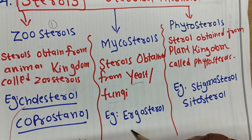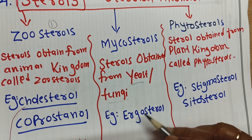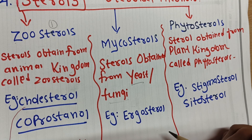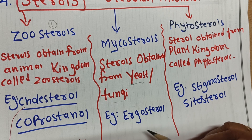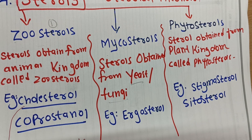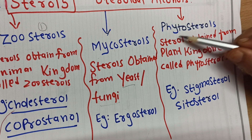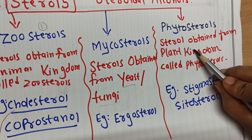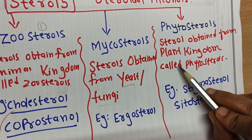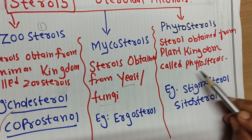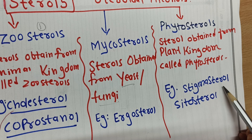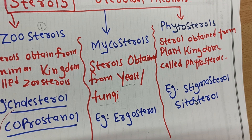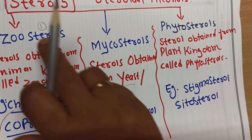Mycosterols are obtained from yeast or fungi; the main example is ergosterol. Phytosterols are sterols obtained from the plant kingdom; examples include stigmasterol and sitosterol.